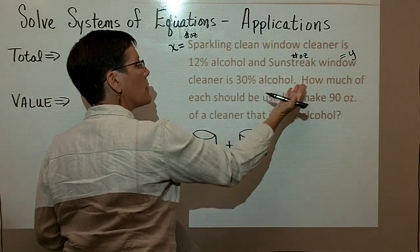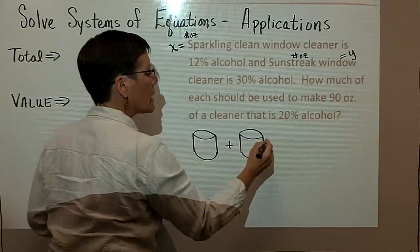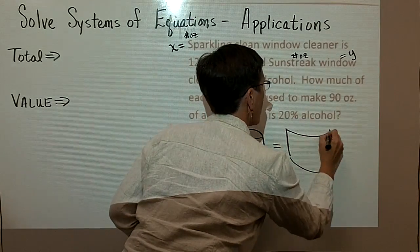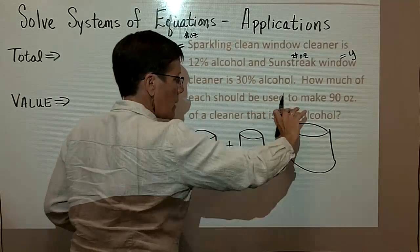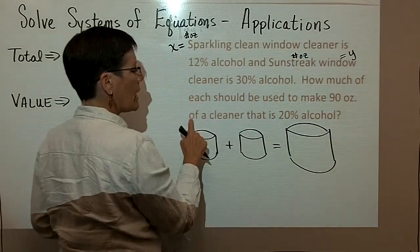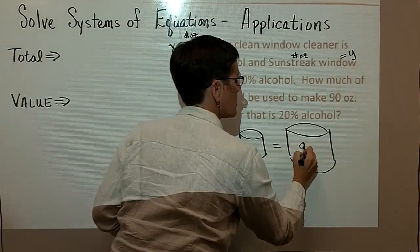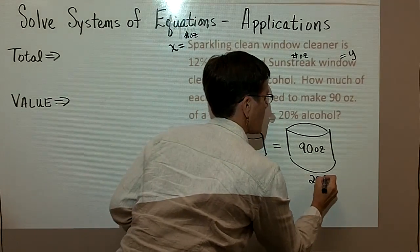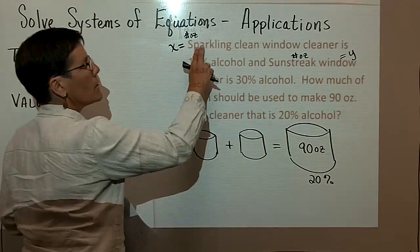And I want to know how much of each should be used to make, to put together, to equal into a big bucket. So I'm going to dump this one in and dump this one in to make 90 ounces of a cleaner that is 20% alcohol.